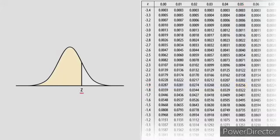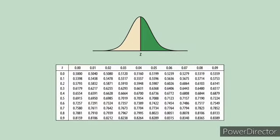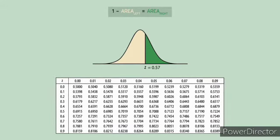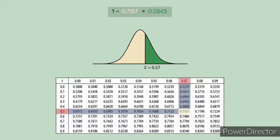We can also use the standard normal table to determine the area to the right of any z value. All we have to do is take 1 minus the area that corresponds to the value. For example, to determine the area to the right of a z-score of 0.57, we find the corresponding area from the table and subtract from 1. According to the table, the z-score of 0.57 has an area of 0.7157 to the left, so 1 minus 0.7157 gives us an area of 0.2843.